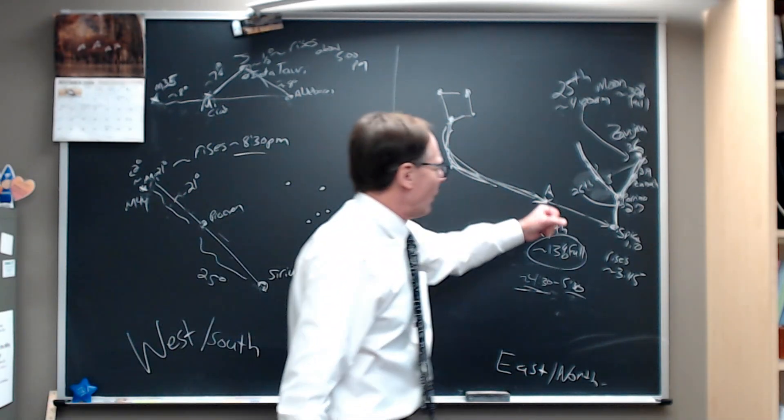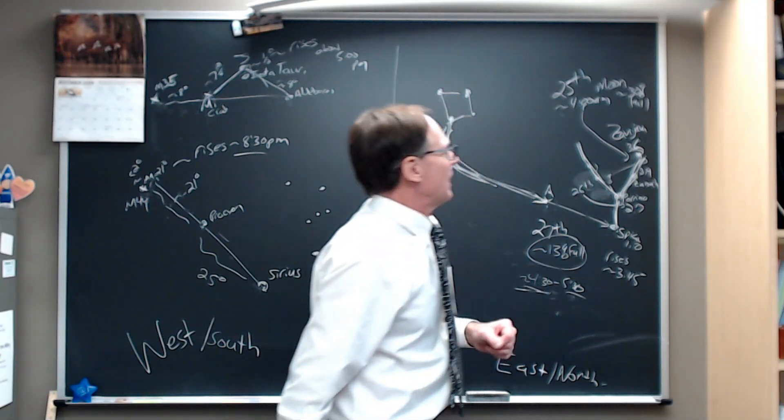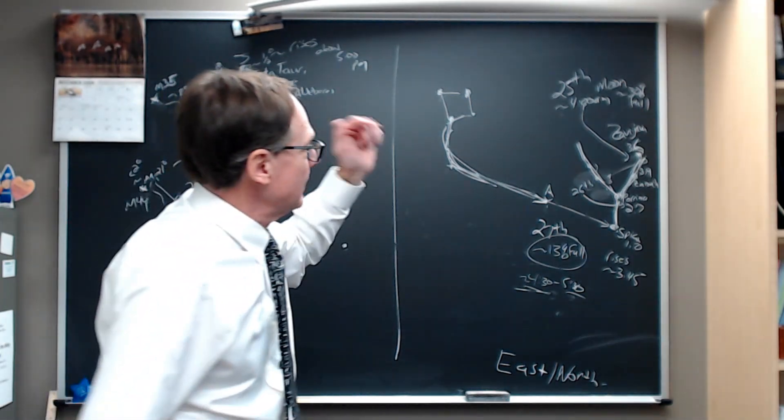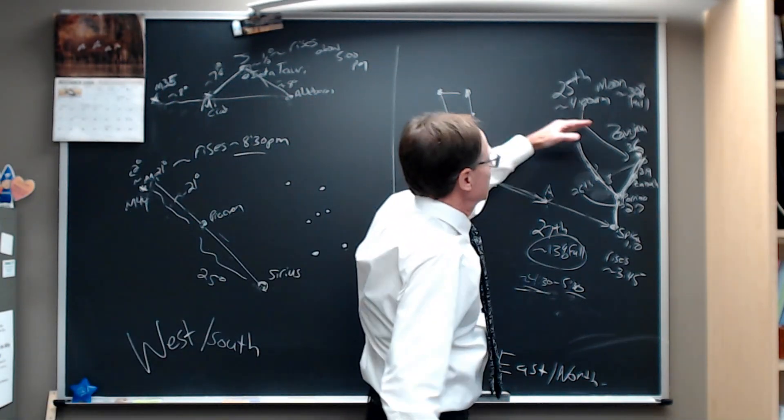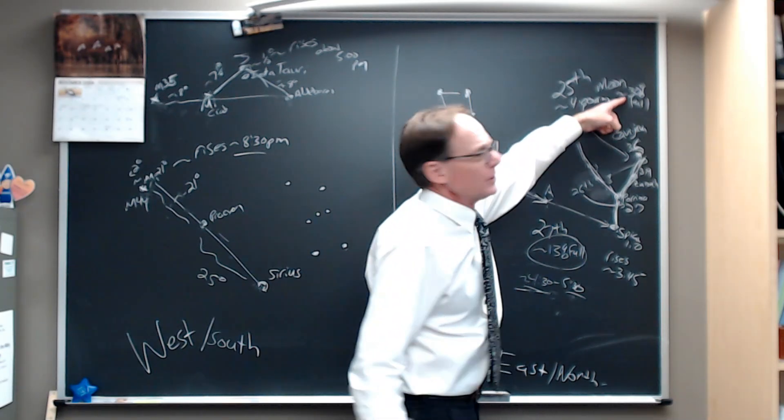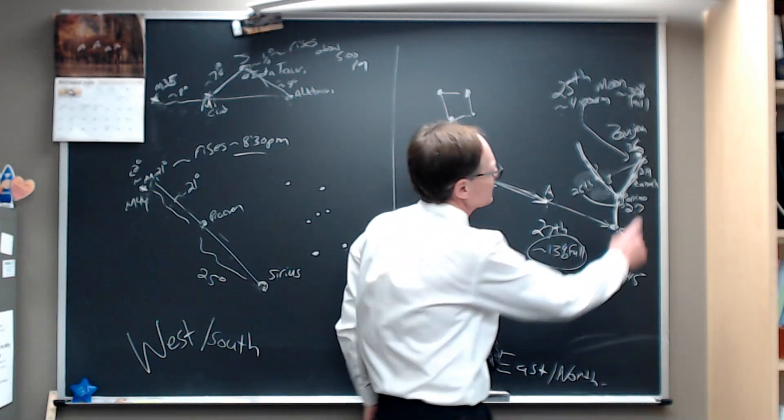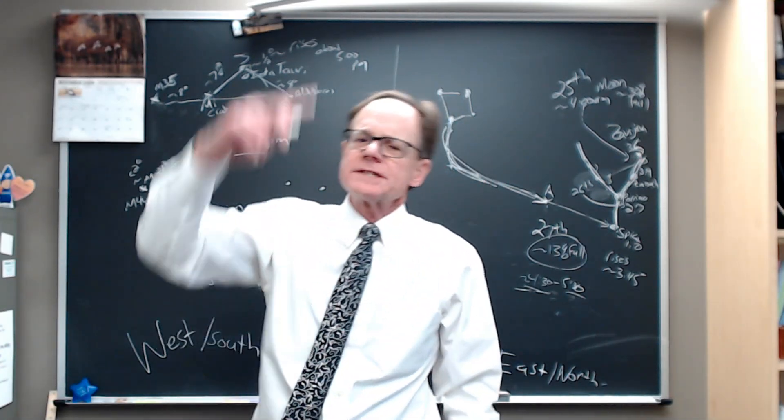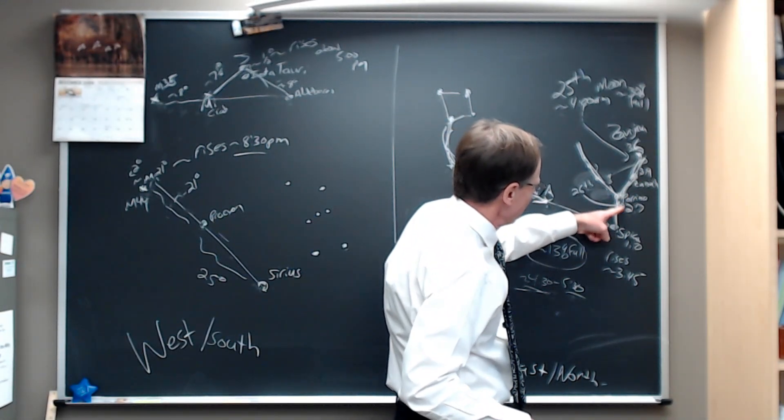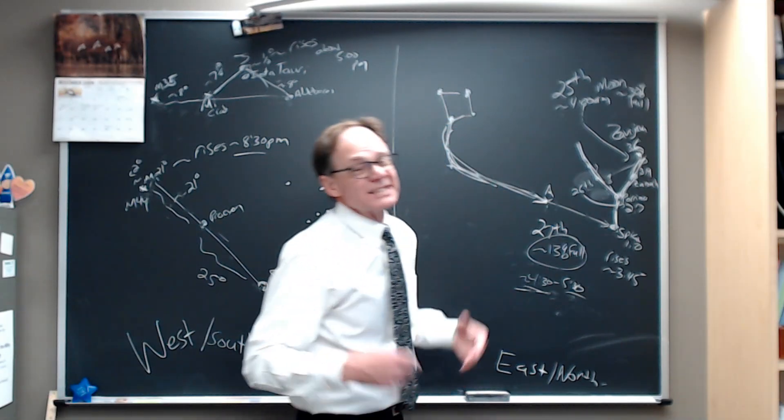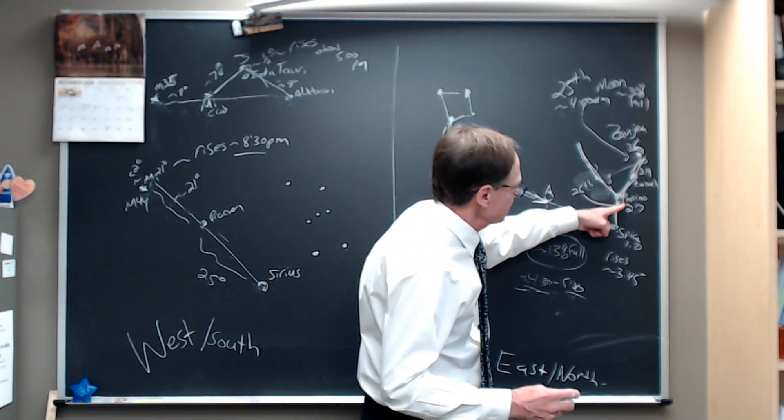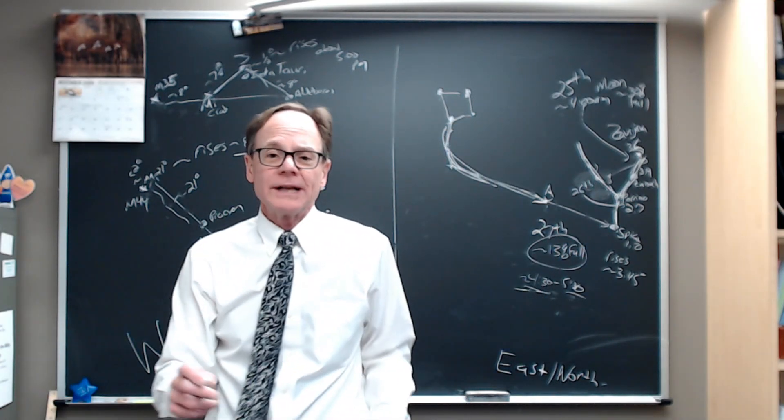Zaniah is a 3.9 magnitude star, and Zavijava is a 3.6 magnitude star up above there. The moon, on that morning of the 25th, about 5 a.m., for me here in the middle of North America, up north in the middle of the United States, the moon will be about one-third full, and it's going to scoot between Zavijava and Zaniah, a little bit closer to Zavijava. By the next day, it passes down below Porrima on the 26th, about 20% full, a beautiful crescent moon.